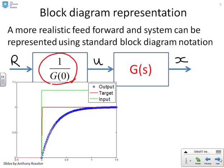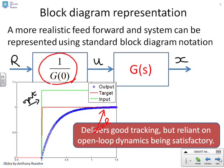Here's the figure you get when I use this feedforward 1 over G of zero rather than 1 over G of s. The X has gone to the desired set point. You can see the steady state for X equals the steady state for R. The input is now a step, which is feasible and realistic. Your only question is whether you're happy with this response. Using a feedforward 1 over G of zero will deliver good steady-state tracking, but it's reliant on the open-loop dynamics being satisfactory.